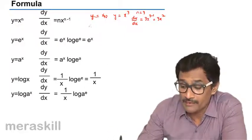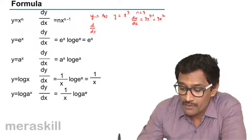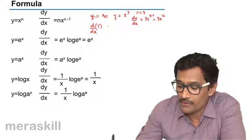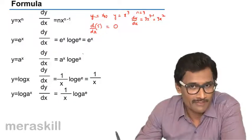Another very important thing is suppose you want to find the derivative of a constant, say 5. Now derivative of a constant will always be zero.